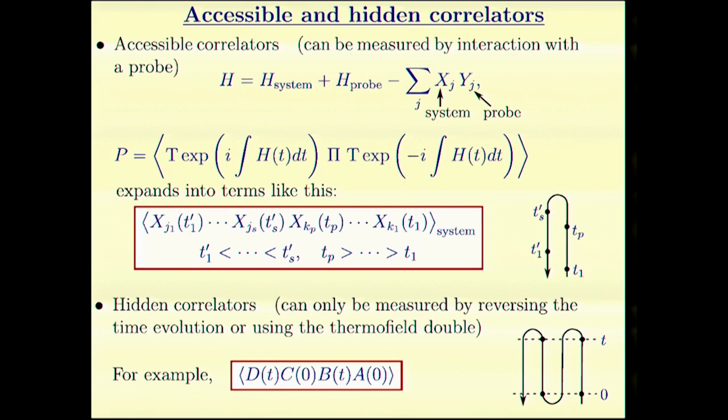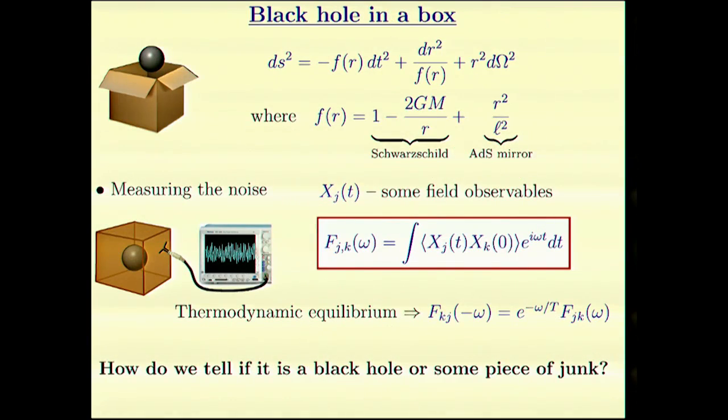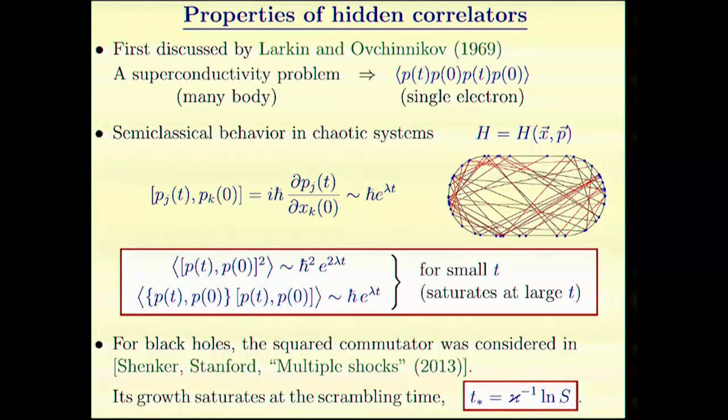Such correlators were first introduced by Larkin and Ovchynnikov in 1969, and they were real condensed matter physicists. They didn't think about artificial settings, just real condensed matter systems. They reduced a many-body problem to this correlator in a single-body problem for a single electron. But secretly, this correlator knows that it is a many-body problem. At least it's related to a Cooper pair, which is like the thermal double.